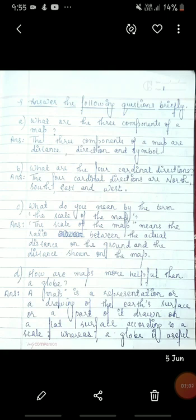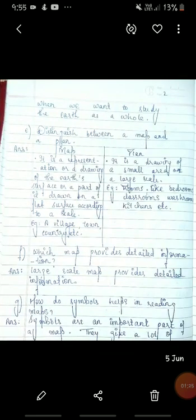Another question. How are maps more helpful than a globe? Answer. A map is a representation or a drawing of the earth's surface or a part of it shown on a flat surface according to a scale, whereas a globe is useful when we want to study the earth as a whole.